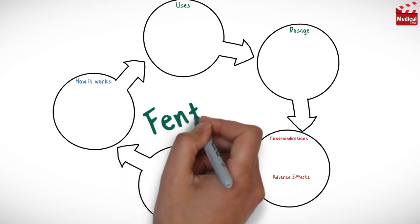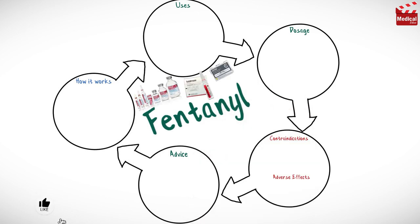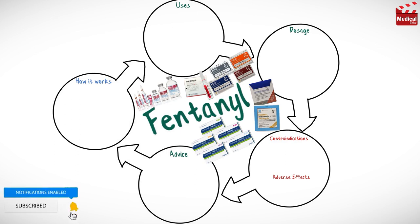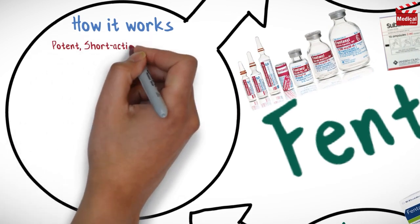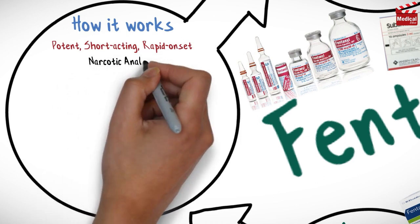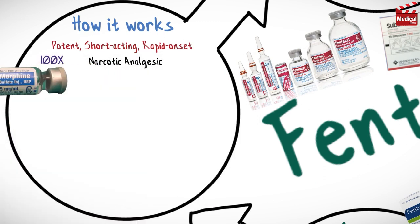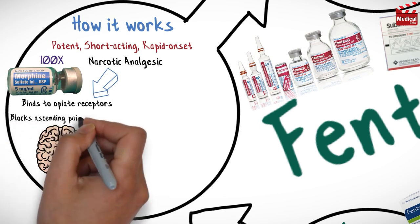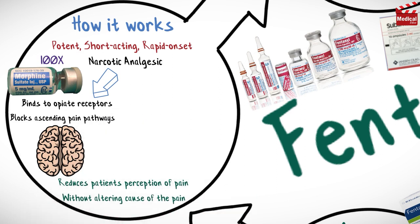In this video we will briefly discuss what fentanyl is, how it works, what it's used for, the dose, and side effects, contraindications, and precautions. Fentanyl is a potent, short-acting, and rapid-onset narcotic analgesic. It has 100-fold the analgesic potency of morphine. It binds to opiate receptors and blocks ascending pain pathways, reducing the patient's perception of pain without altering the cause of the pain.